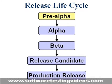Sometimes a build known as pre-alpha is issued before the release of an alpha or beta. In contrast to alpha and beta versions, the pre-alpha is not feature complete. When it is used, it refers to all activities performed during the software project prior to software testing. These activities can include requirement analysis, software design, software development, and unit testing.